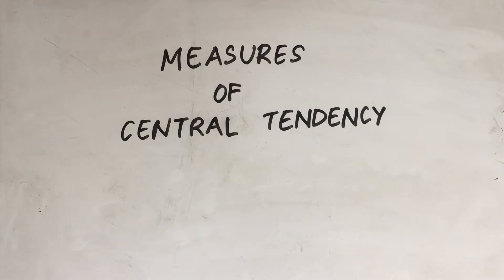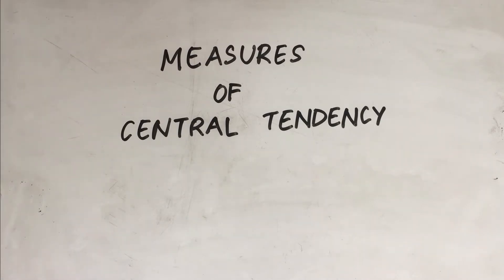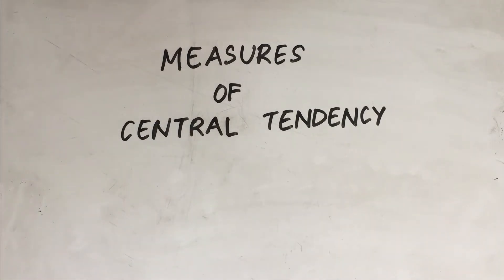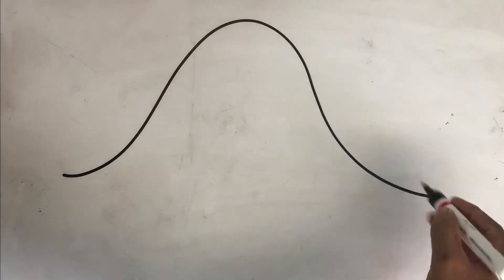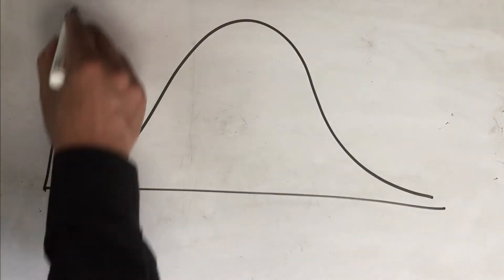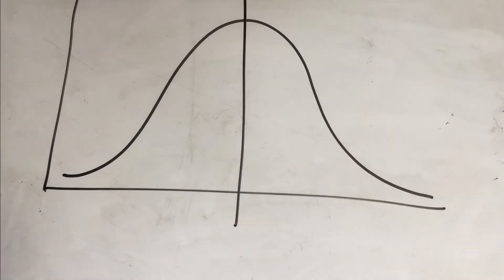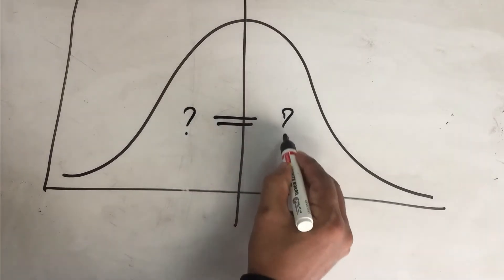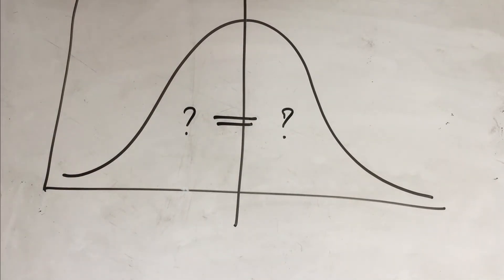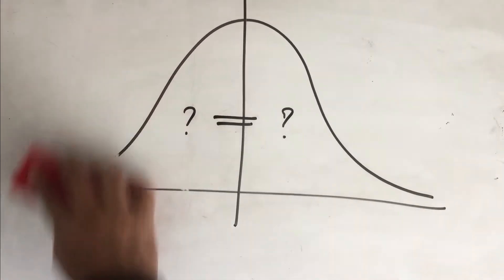Today we are going to discuss another fundamental concept in biostatistics: measures of central tendency. This asks whether the data is symmetrically distributed — can we say the left-hand side of the distribution equals the right-hand side? For example, if we divide a curve into two equal parts, is the left part equal to the right part?